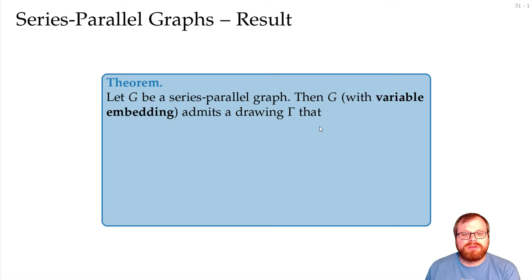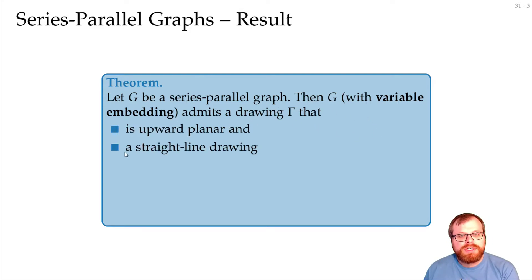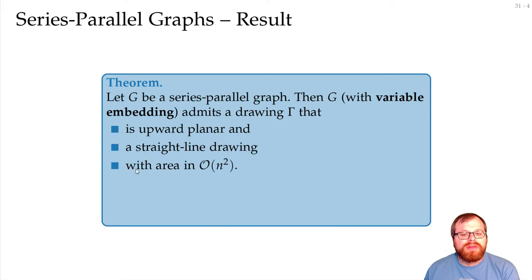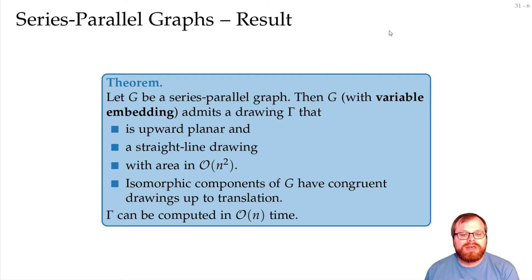This gives us our result. If we have a series-parallel graph and we are allowed to change the embedding, then we get a drawing that is upward and straight-line, with area in order of n squared. Isomorphic components have congruent drawings up to translation, and the drawing can be computed in linear time.